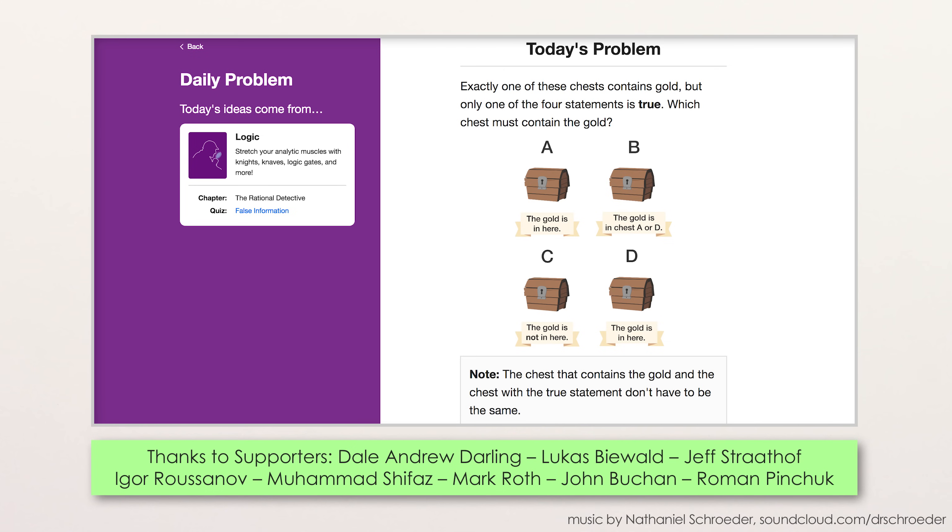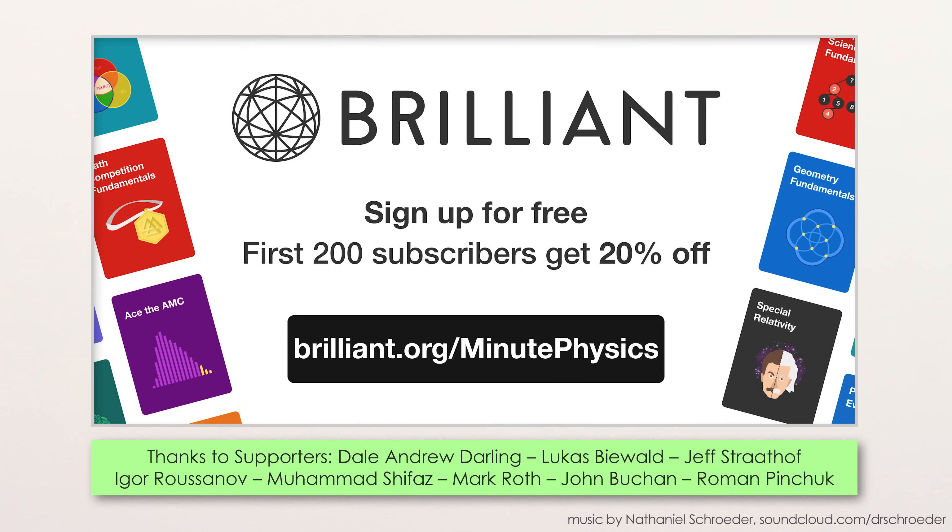You can solve these problems – and sign up for a new quick question to your inbox every day – by going to Brilliant.org slash MinutePhysics, which will also give the first 200 people 20% off a premium subscription to Brilliant with access to all of their courses and puzzles and past daily problems. Again, that's Brilliant.org slash MinutePhysics to stop your brain from spontaneously decaying.